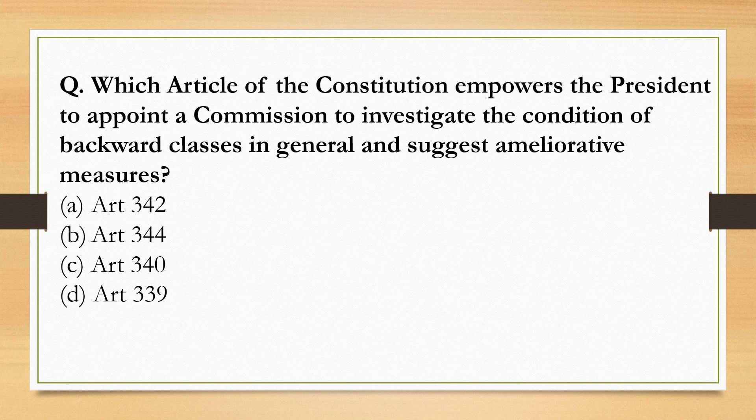Which Article of the Constitution empowers the President to appoint a commission to investigate the condition of backward classes in general and suggest ameliorative measures? This is Article 340 — Option D.